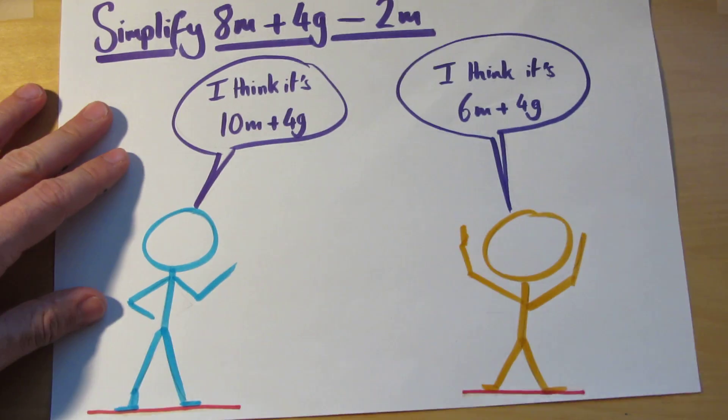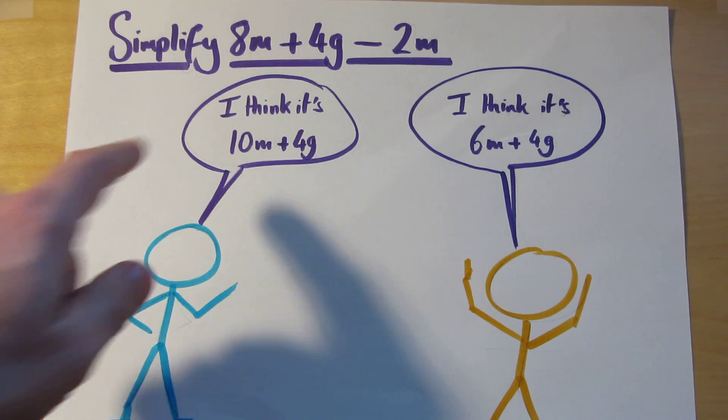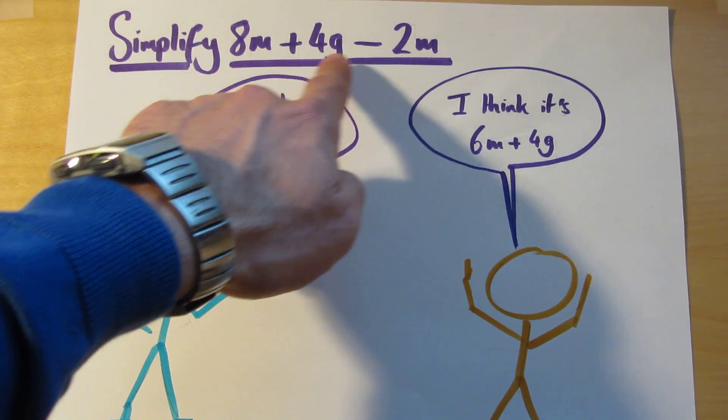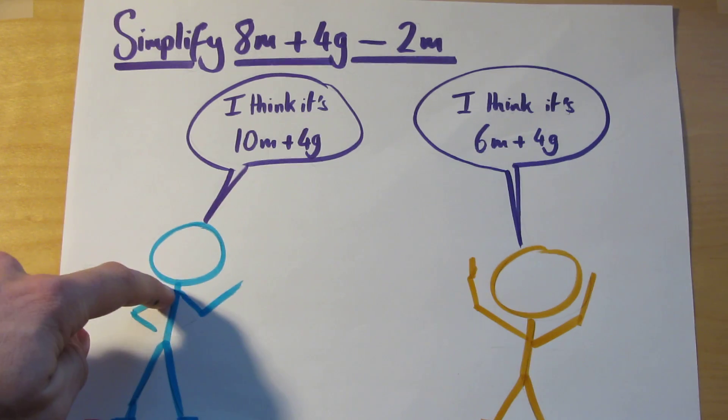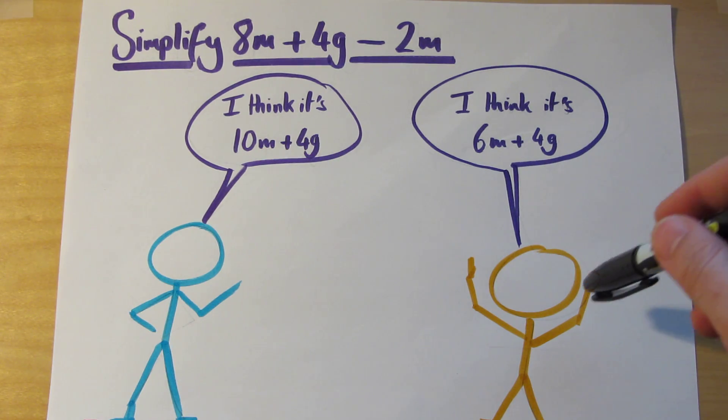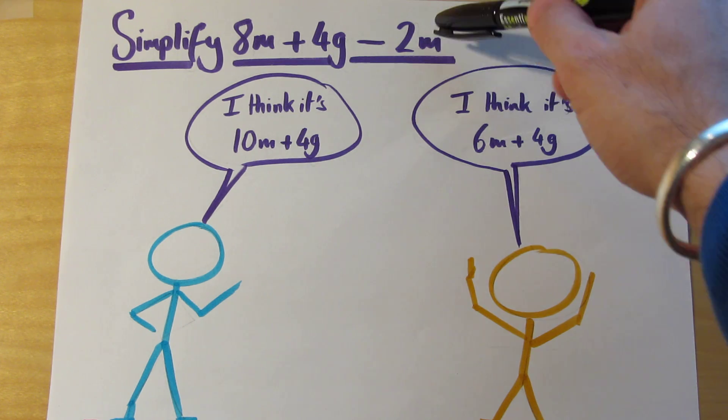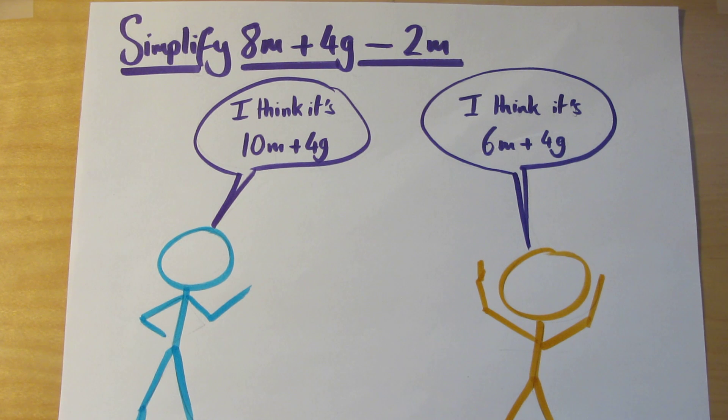I have one conundrum here. These two people, blue person and orange person, are trying to simplify the expression 8m plus 4g take away 2m. Person blue thinks it's 10m plus 4g. Person orange thinks that that will simplify to 6m plus 4g. So I'm going to pause the video now to give you the chance to think about it and then I'm going to quickly go through the workings.